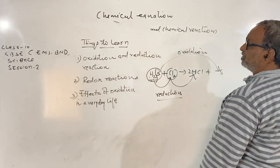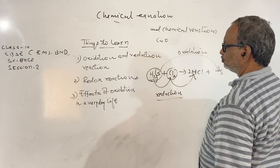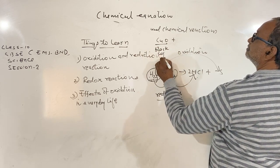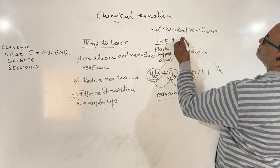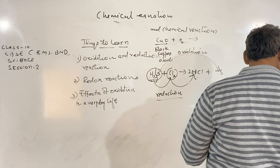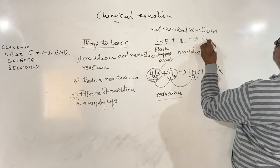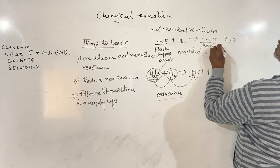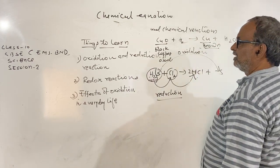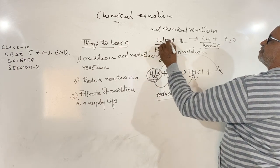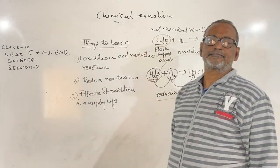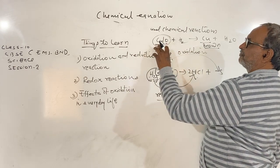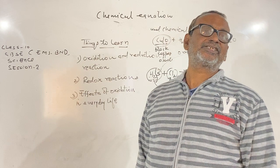Now consider one more example: when hydrogen gas is passed over heated copper oxide (black copper oxide), a brownish metal — copper — is obtained. In this reaction, oxygen is separated from copper(II) oxide. So the chemical reactions in which either hydrogen is combined or oxygen is separated from a substance are called reduction reactions.